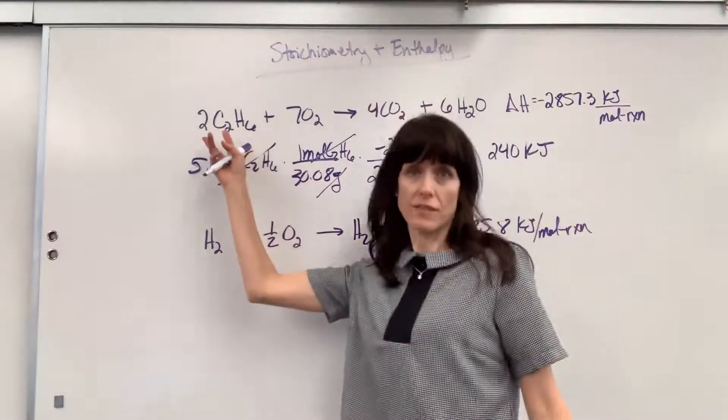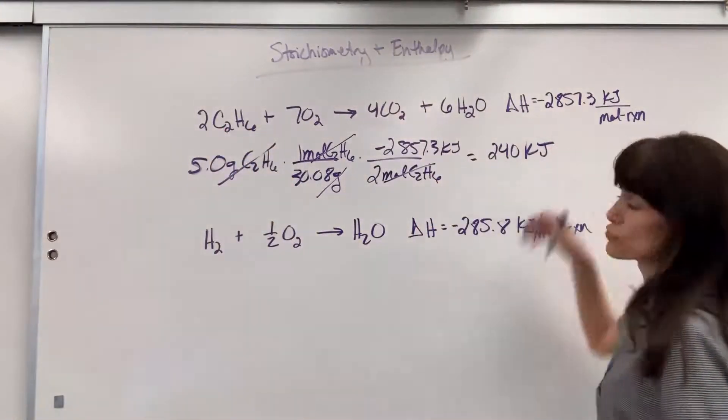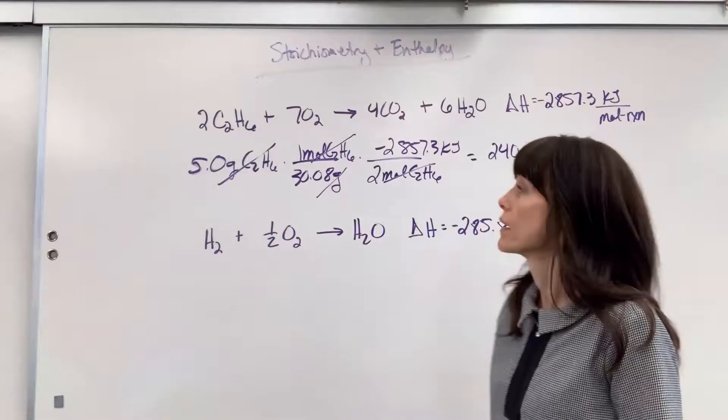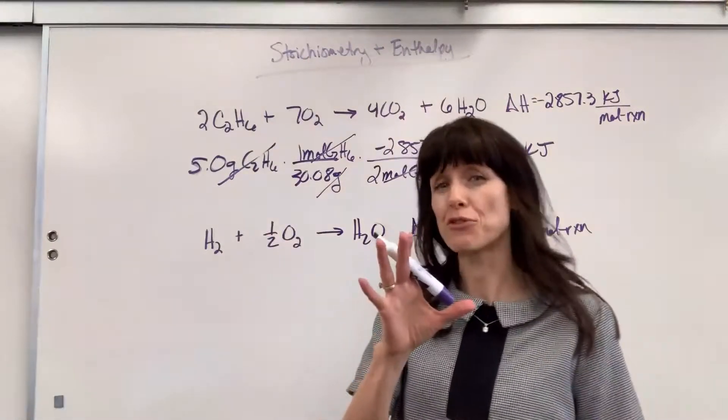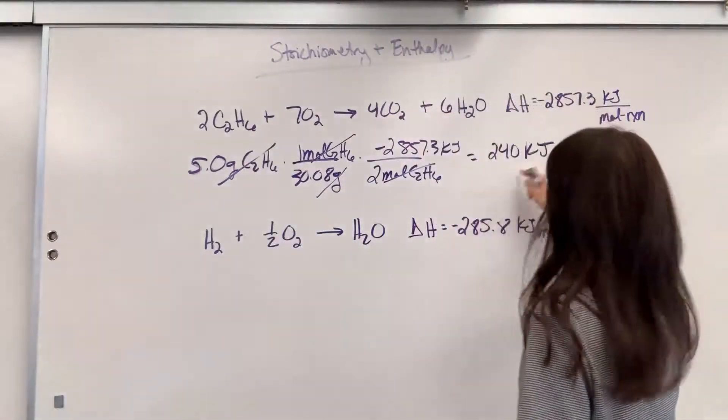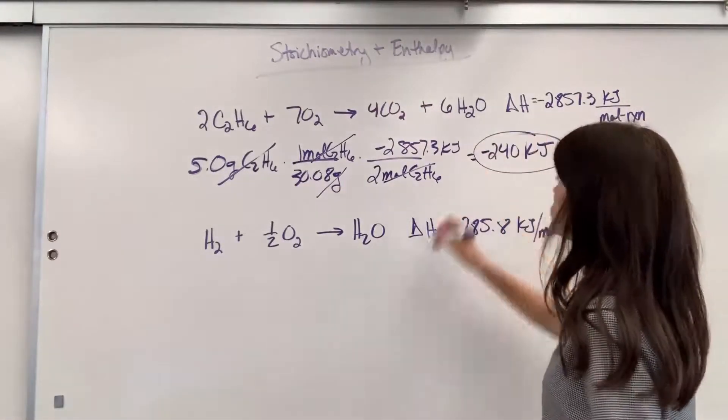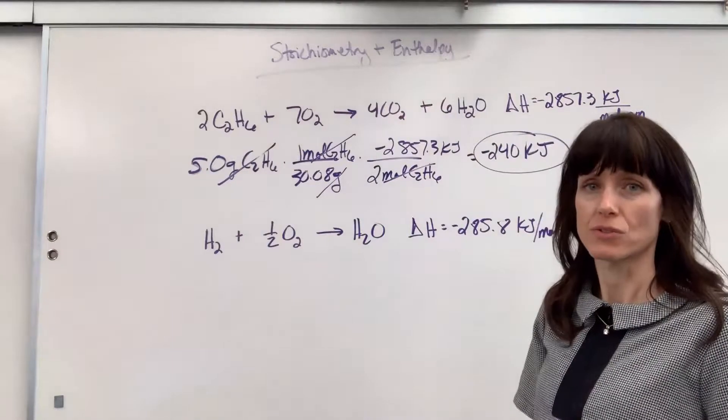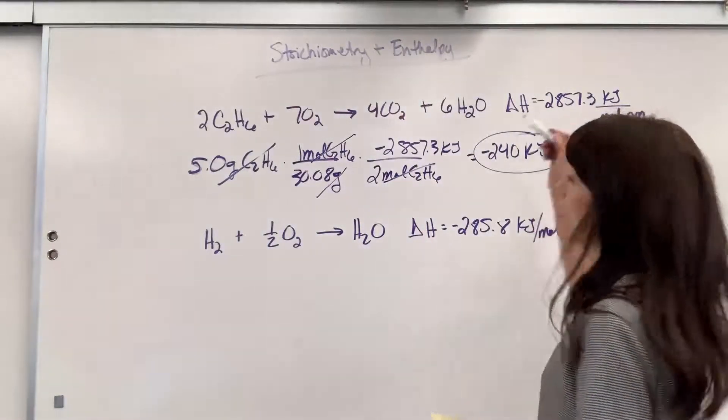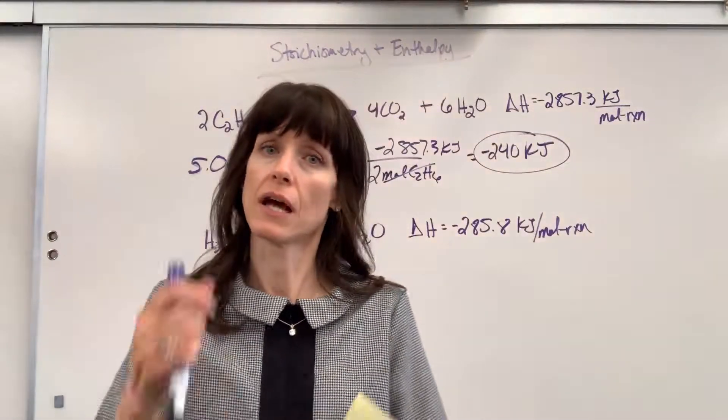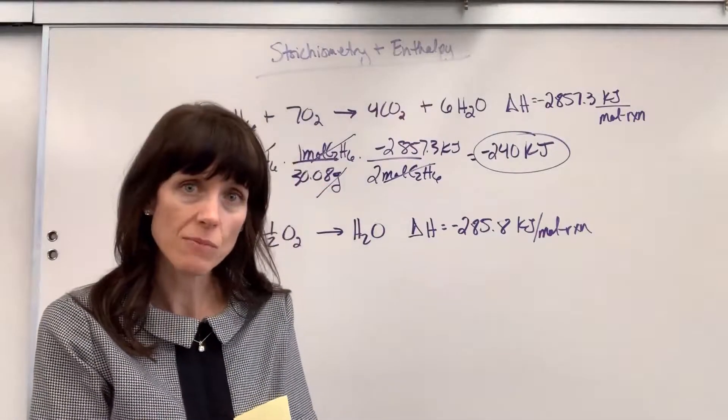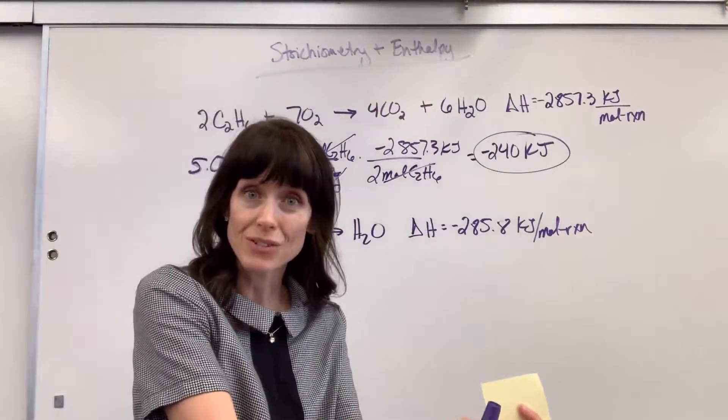So if I have two moles of ethane, it's going to produce 2,800 kilojoules. But if I've only got five grams of ethane, I'm going to make sure I carry my negative, it's going to release 240 kilojoules. So again, the thermochemical equation allows you to go from amount of substance moles to amount of energy.